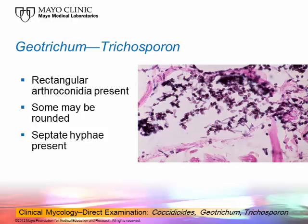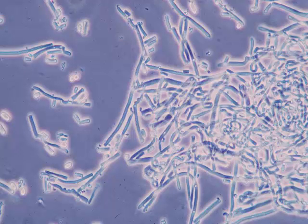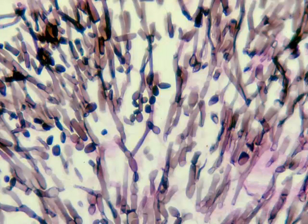Trichosporon is the one that causes disease most often, particularly in leukemic patients. This is a phase-contrast photomicrograph of hyphae broken down into arthroconidia — you can see the rectangular segments everywhere, and that's what Geotrichum would look like. Trichosporon would look the same unless you were to find an area with a few budding cells, then you could call it Trichosporon. You just have to continue to look to see what the consensus is — that's what you have to do with most everything: look to see what's there and get a consensus of the morphology.